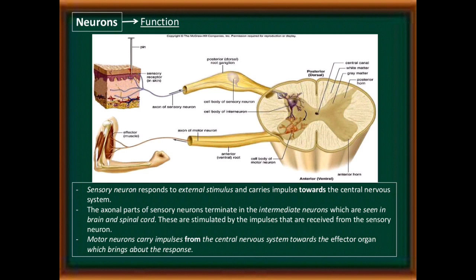Functions of neurons: sensory neurons respond to external stimuli and carry impulses towards the central nervous system. The axon part of the sensory neurons terminates in intermediate neurons, which are seen in the brain and spinal cord. These are stimulated by impulses received from sensory neurons. Motor neurons carry impulses from the central nervous system towards the effector organ, which brings about the response.